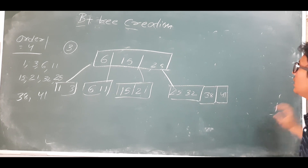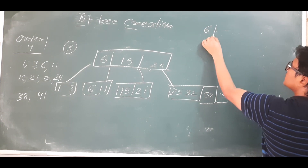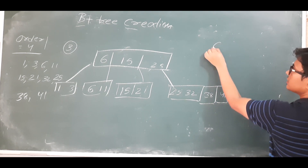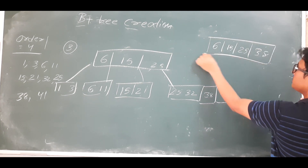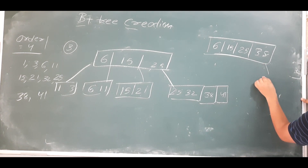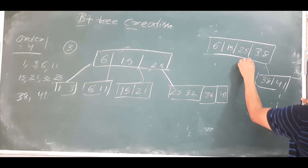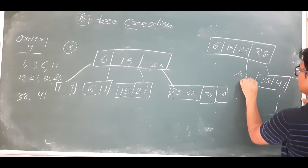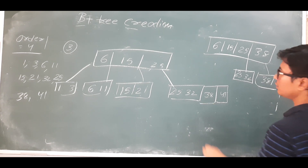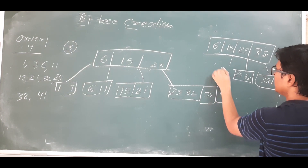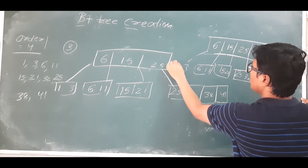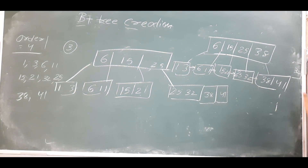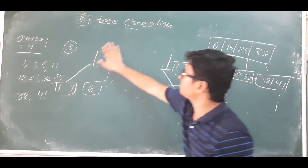Since there is an overflow in the leaf node, we have to push 38 to the parent node. So the parent node becomes 6, 15, 25, 38. To the right of 38 you will have 38 and 41, to the left of 38 you will have 25 and 32. You also have 15 and 21, then 6 and 11, then 1 and 3 — all leaf nodes are connected. The root node now has more than three elements, so it is in overflow.